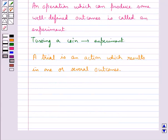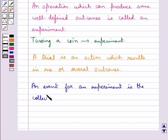Let's define an event. An event for an experiment is the collection of some outcomes of the experiment.